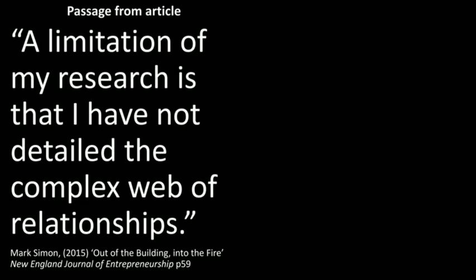They opened the door of the castle for us — they handed us the keys to attack their castle. By stating their limitations, they have made our job easier. We should feel confident using this critique because it comes from the authors themselves. We do not need to fear that our critique will be incorrect, because the author has stated it. Here is an example: we are reading Mark Simon's paper and we find this passage.